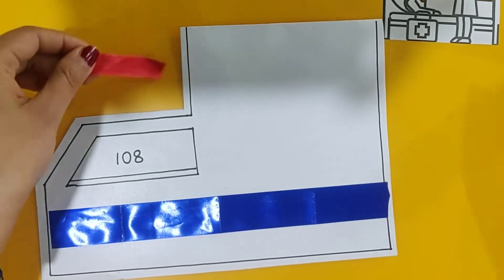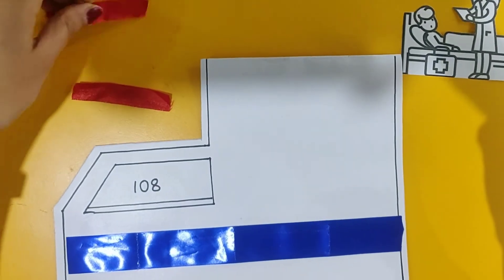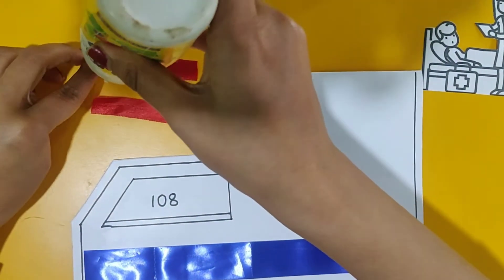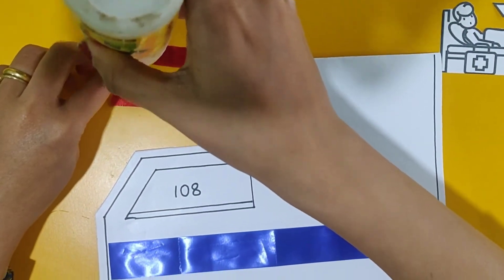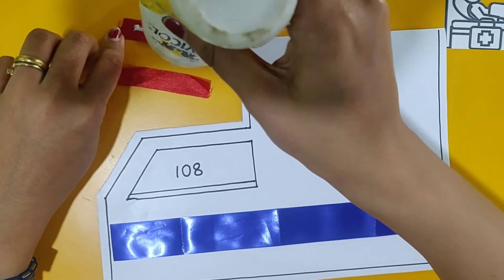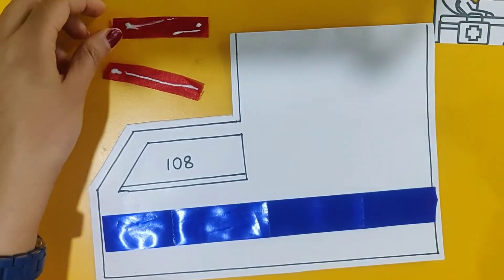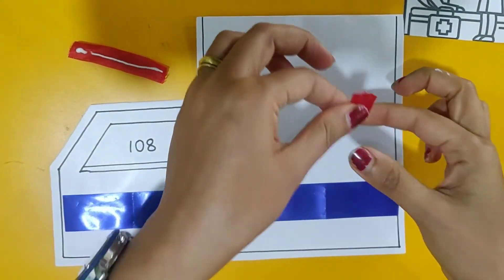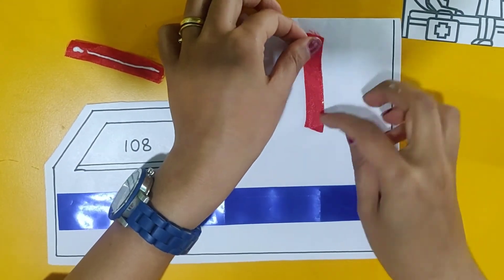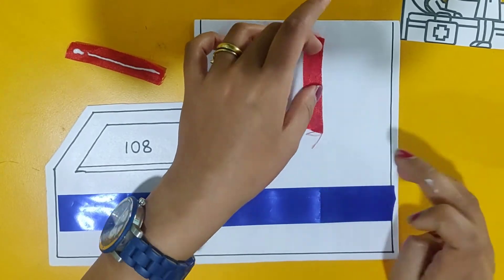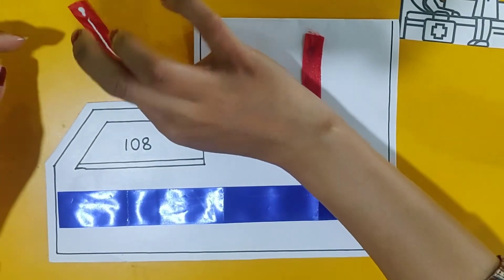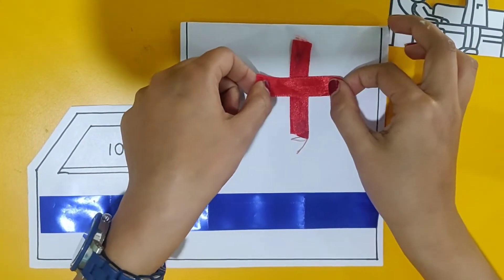Then we are going to take the red color ribbon and make a plus sign. Like this and now we are going to do a standing line first and a sleeping line and make a plus sign.